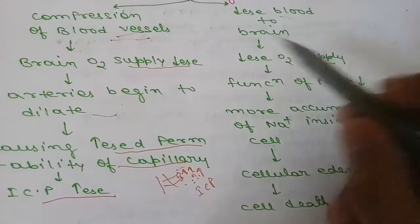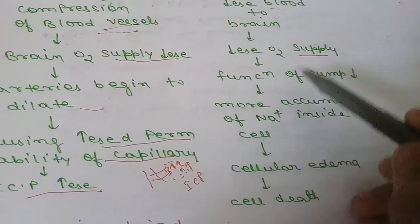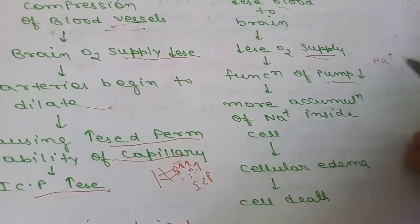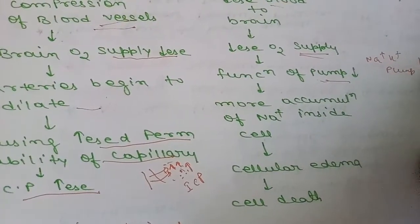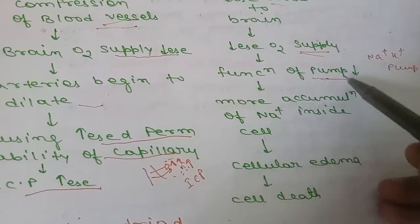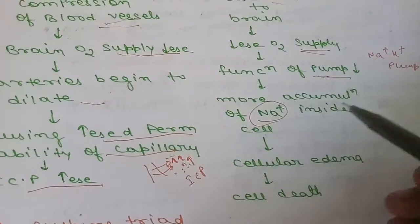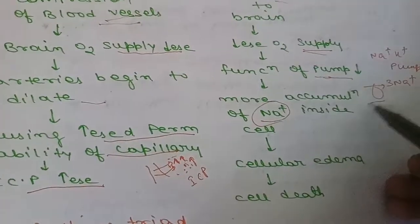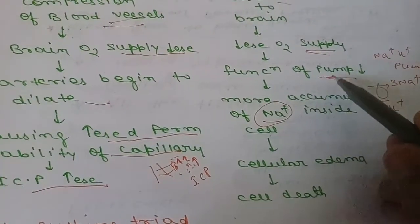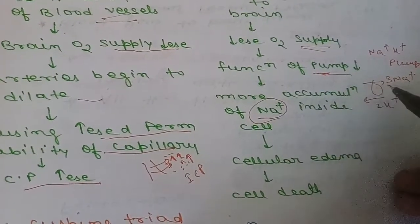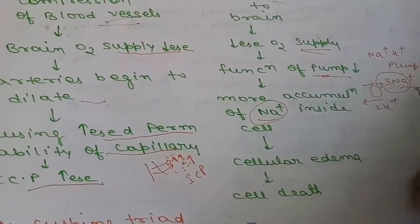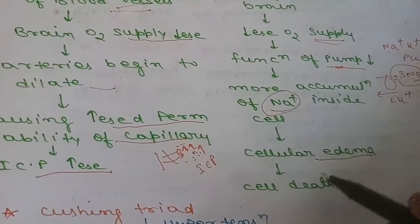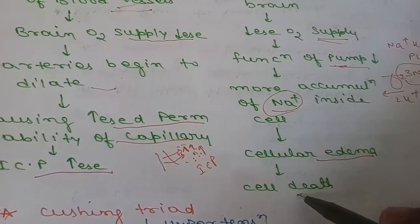This increased intracranial pressure again decreases blood flow and oxygen supply to the brain. Due to decreased oxygen supply, the function of the sodium-potassium pump decreases. Since the pump normally throws three sodium ions out of the cell and two potassium ions in, if it malfunctions, sodium accumulates within the cell, causing cellular edema and ultimately cell death.